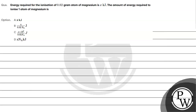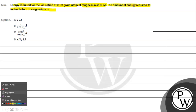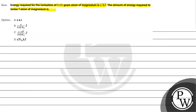Let's read this question. The question says: energy required for ionization of 0.02 gram atom of magnesium is x kilojoule. The amount of energy required to ionize one atom of magnesium is: option A - x kilojoule, option B - x by 0.02 into Avogadro's number joules, option C - x into 10 raised to the power 3 by 0.02 into Avogadro's number joules, option D - x into Avogadro's number kilojoule. The key concept for this question is ionization energy.